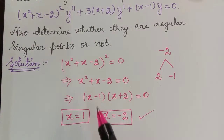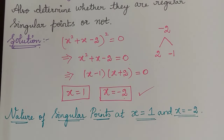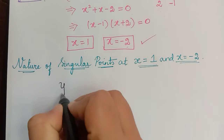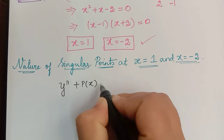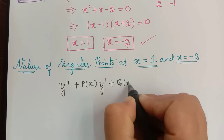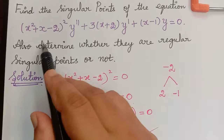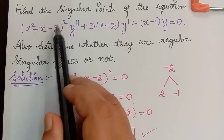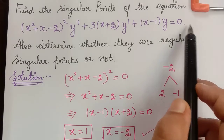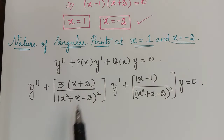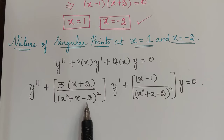Now next we have to determine the nature of these singular points one by one. In order to determine the nature at x = 1 and x = -2, first of all we need to rewrite the given equation in the form y'' + p(x)y' + q(x)y = 0. In order to do that, in the given equation we have to divide by (x² + x - 2)² throughout the equation.